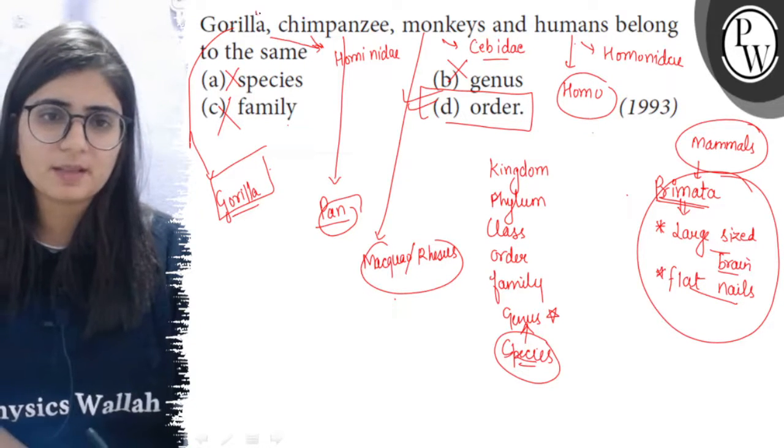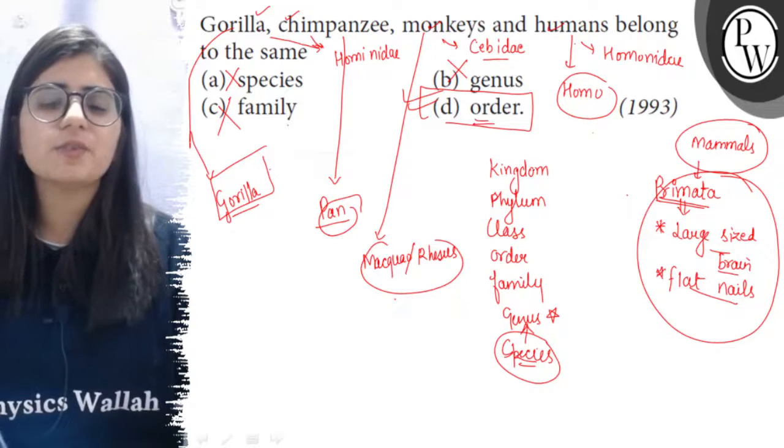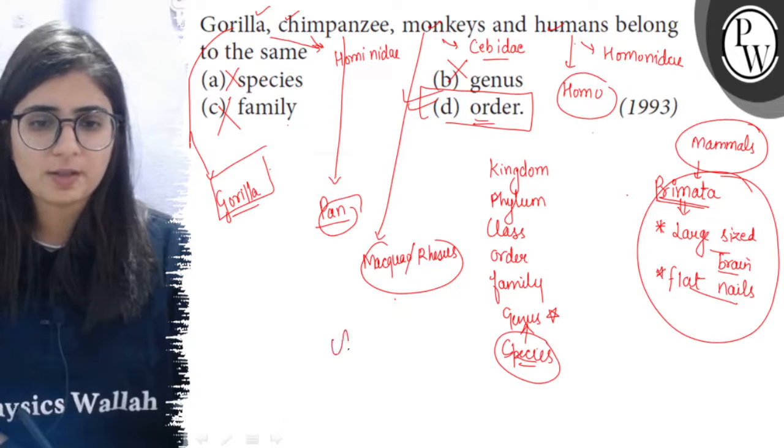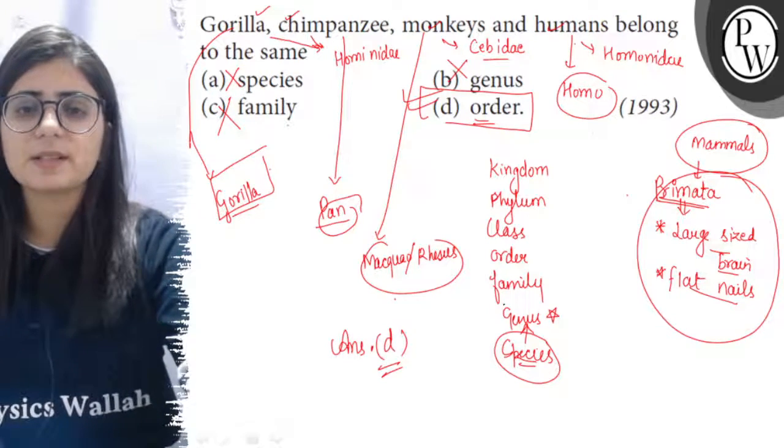All these - apes, monkeys, and human beings - are members of the same Order Primates. So option D is the right answer. I hope it is helpful. All the best.